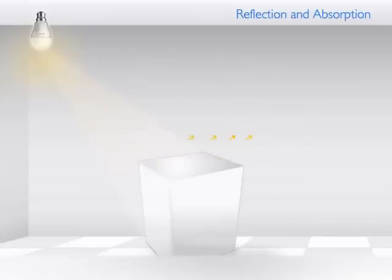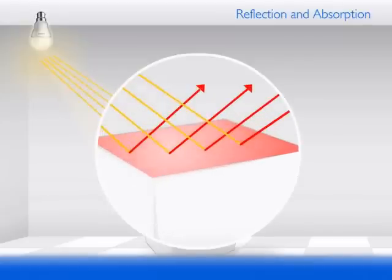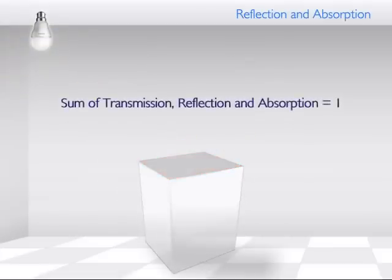For example, a red surface reflects the red light but absorbs most of the other colors. Sum of transmission, reflection, and absorption equals 1.